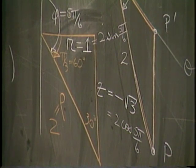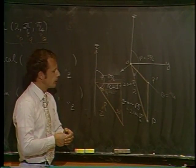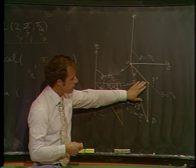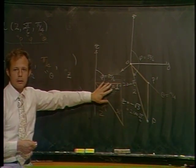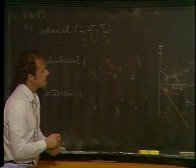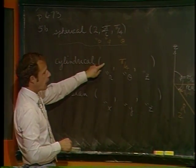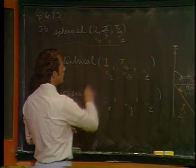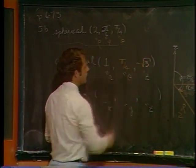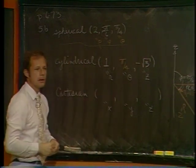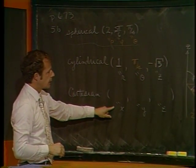I suggest sketching the three-dimensional picture, but more importantly the two-dimensional triangle that gives you the values you need. For cylindrical coordinates we now have R = 1, theta = π/4, and Z = −√3, so we're all done with cylindrical. For X, Y, Z we aren't quite done yet.